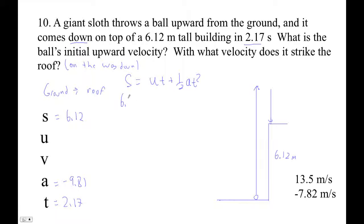So S is U T plus 1 half A T squared. So 6.12 is U times 2.17 plus 1 half negative 9.81 times 2.17 squared.